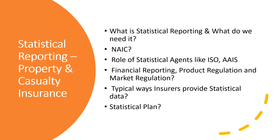When we say statistical plan, every statistical plan will have a defined format. For example, if you want to send policy information, the fields must be structured — starting with policy number, followed by the insured name, etc. To ensure consistency, statistical agents assign unique codes so the data is uniform across all insurance companies. Without this, it would be very difficult to have consistent data across companies with different coverage structures. It is the responsibility of the insurance company to convert raw data into the format the statistical agency expects, then submit it so the agency can review it and send it to the Department of Insurance.